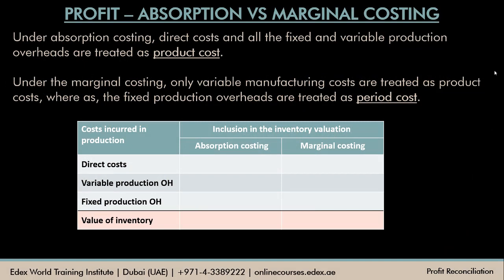Under absorption costing, the direct cost and all the fixed and variable production overheads are treated as product cost. There are two types of cost: product cost and period cost. Product cost means anything you attach to the product, and period cost means anything you don't attach to the product but treat as the cost of a particular period. Under absorption costing, direct material cost, direct labor cost, or any other direct expenses plus all the fixed and variable production overheads — all of these are treated as product cost.